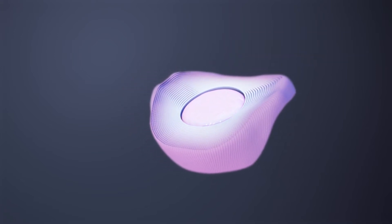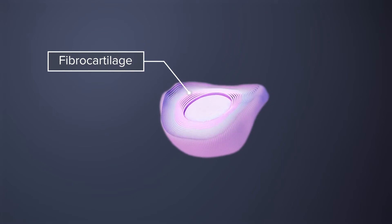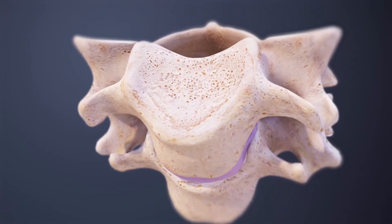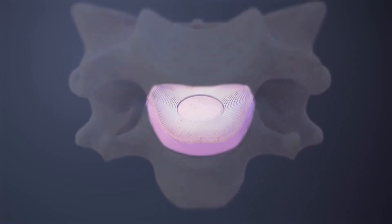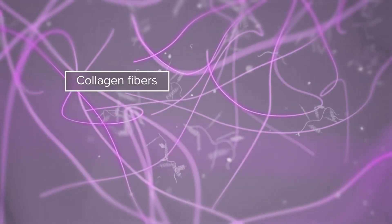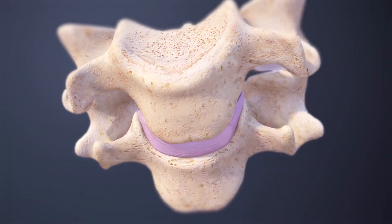The annulus fibrosis is composed of fibrocartilage that can distribute heavy loads placed on the disc. The nucleus pulposus is composed of a loose network of collagen fibers suspended in mucoprotein gel, which gives the disc more cushioning and flexibility.